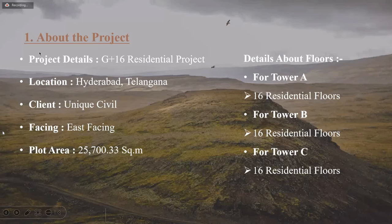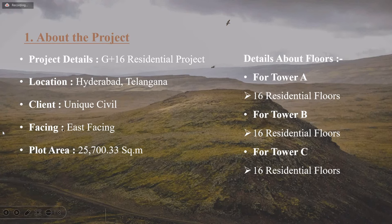These are the project details. It is a G-Place 16 residential building project which is located in the city of Hyderabad, Telangana state. The total plot area is 45,700 square meters and the facing of the plot is east facing. In this project there are three towers — Tower A, Tower B, and Tower C — with 16 residential floors each.